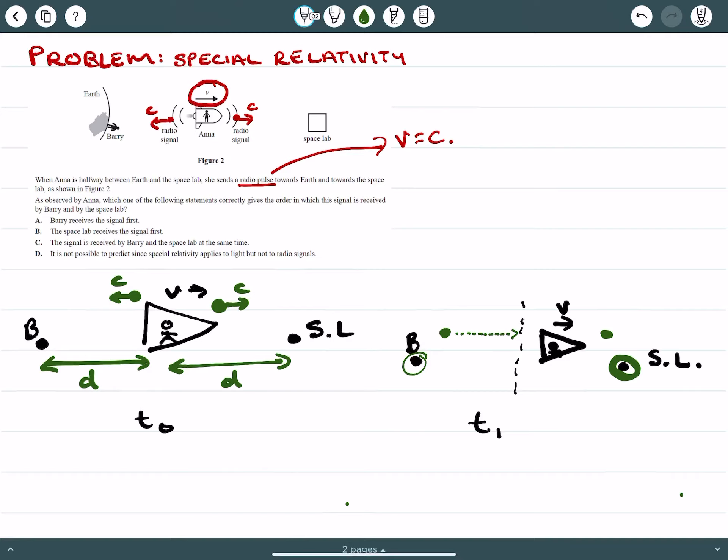So this is really a key kind of question to have a look at Einstein's second postulate. And therefore, from Anna's perspective, we would say she sees the space lab receives the signal first. So the answer here should be B.